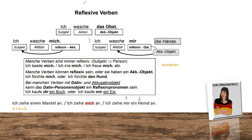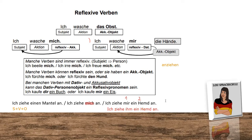As I mentioned, it doesn't have to be reflexive on the subject. You can also put a shirt on a child or on him. Then you would say 'Ich ziehe ihm ein Hemd an.' You can see very clearly that we have a Dativ 'ihm' instead of 'mir' — instead of dressing myself, I dress him. Those are the options.